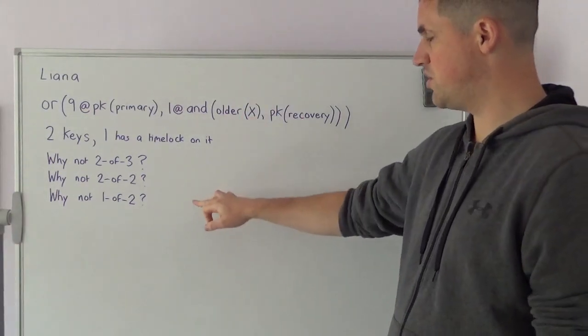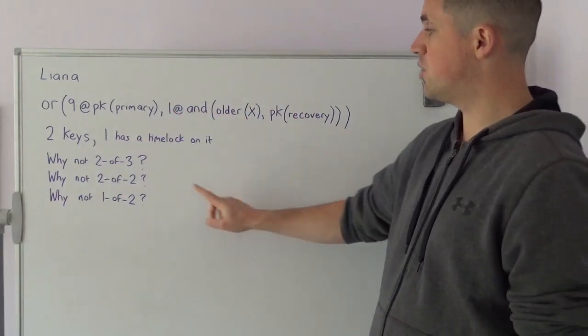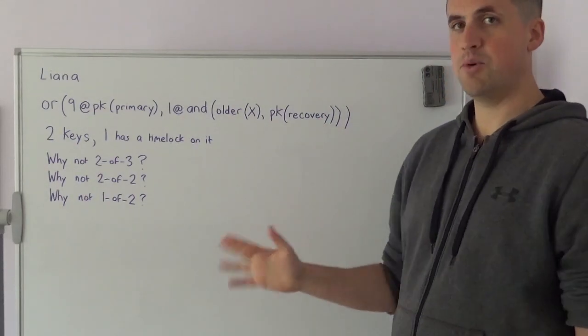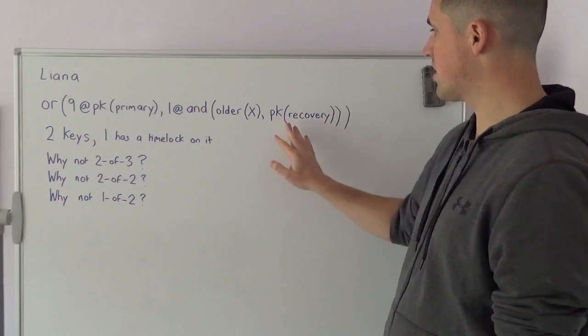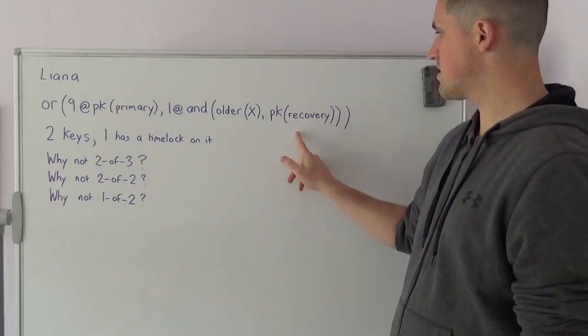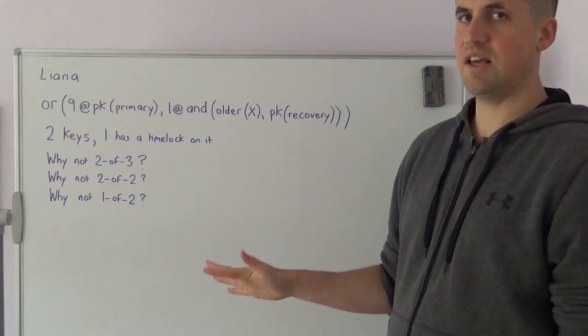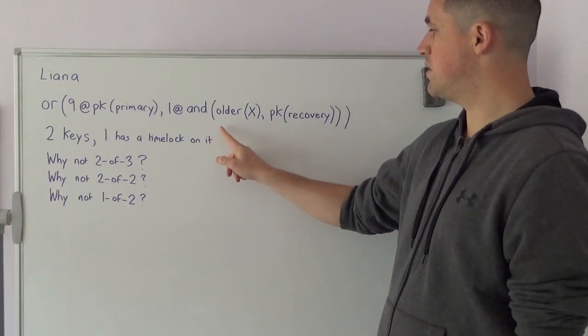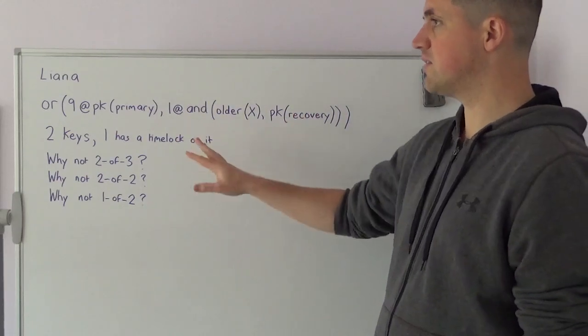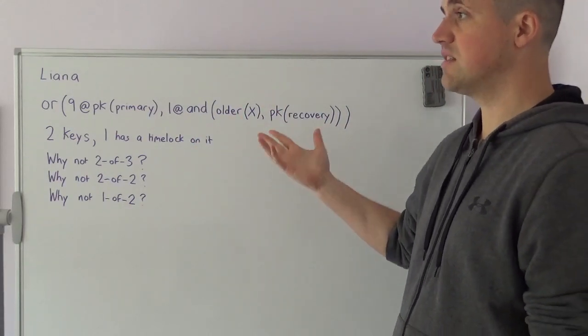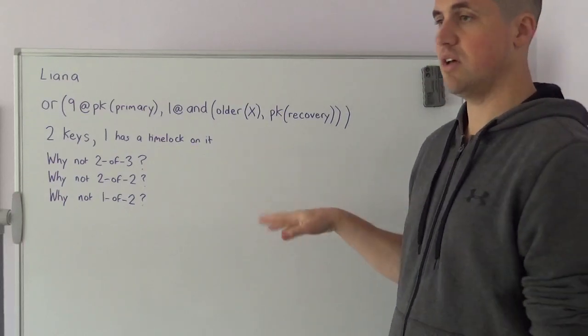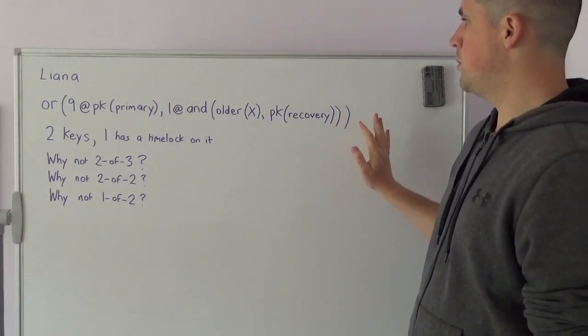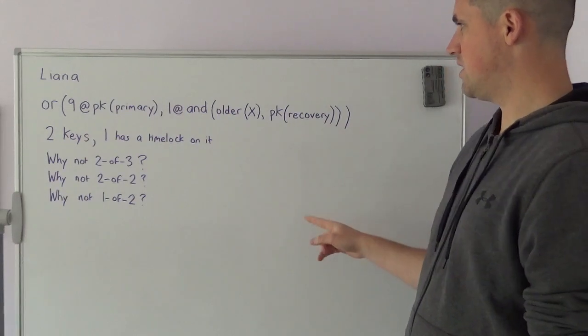If you were to compare this policy to a 1 of 2, in the 1 of 2 case, the recovery key could be used at any point in time. There's no time lock imposed on the recovery key, so if the recovery key is leaked or an attacker gains access to the recovery key, they can move the funds instantly and you've lost your Bitcoin. You don't have this window until the time lock expires to move the funds once you've detected that your recovery key is leaked or an attacker has gained access to it. That is why you would be interested in using this policy that Liana uses.